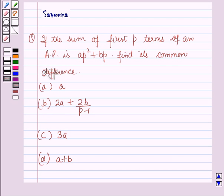And the options are: option A is a, option B is 2a plus 2b over p minus 1, option C is 3a, and option D is a plus b.